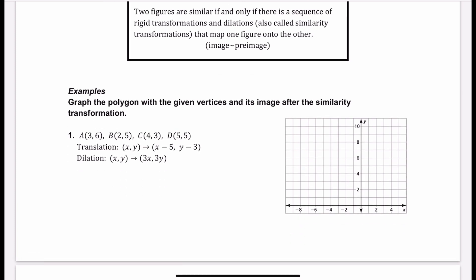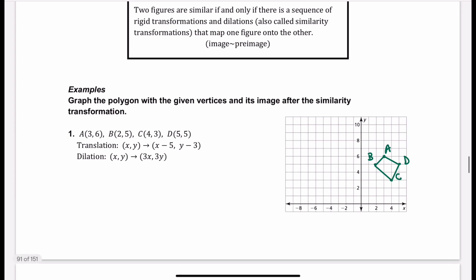Let's start with our first shape, ABCD. Let's go ahead and plot those points — here we have a quadrilateral. We're first going to do a translation: we're going to subtract 5 from all the x-coordinates and subtract 3 from all the y-coordinates, giving us A prime, B prime, C prime, and D prime. For example, on A: 3 minus 5 is negative 2, and 6 minus 3 is 3.